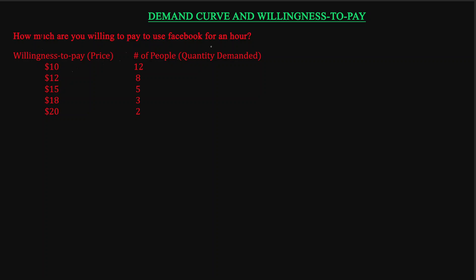This column we'll call 'willingness to pay,' which is how much they are willing to pay to use Facebook for one hour. This column captures the number of people who responded. So 12 people said they are willing to pay $10, eight people are willing to pay $12, five are willing to pay $15, and two are willing to pay $20.